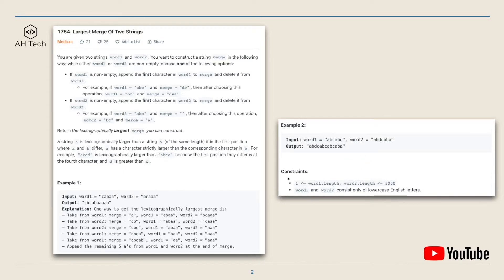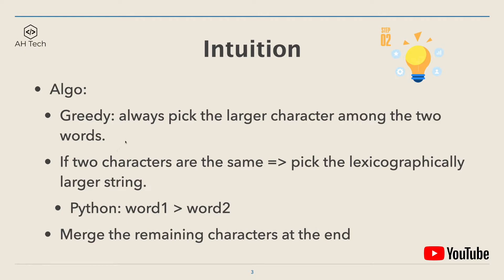The data constraint for this question: the length of word one and word two will be less than three thousand. To solve this question we can use a very intuitive and straightforward greedy algorithm. Since we want the largest merge lexicographically, we just always pick the larger character among the two words. The tricky part is that if two characters are the same, we pick the lexicographically larger string — in Python this can be done simply by comparing the two strings word one and word two.